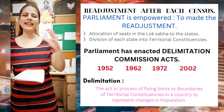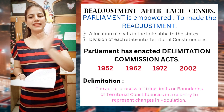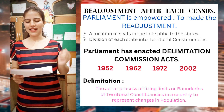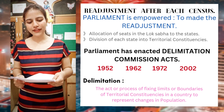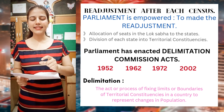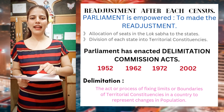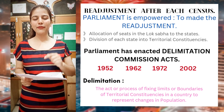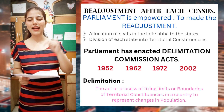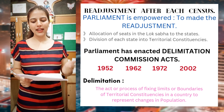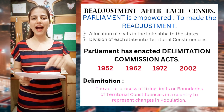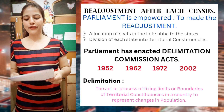So when population is growing and changing across states, on that basis the number of seats also gets changed. So the allocation of seats in the Lok Sabha to the states, and the division of each state into territorial constituencies — this power is given to the Parliament. The Parliament is empowered to make this re-adjustment and to divide each state into territorial constituencies.